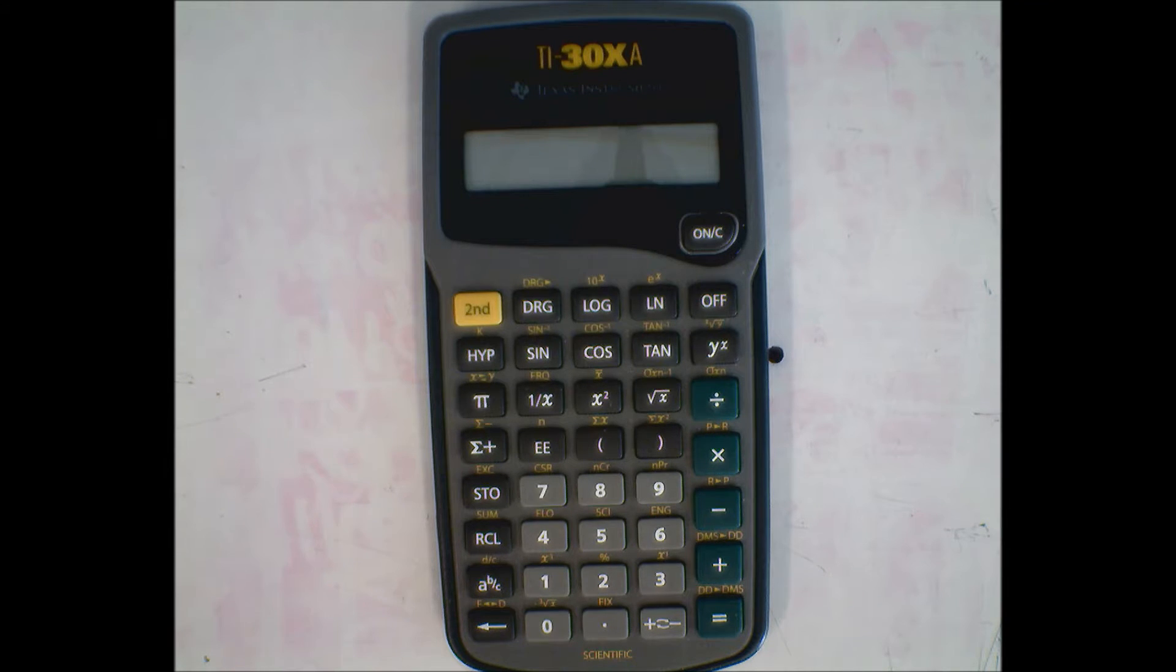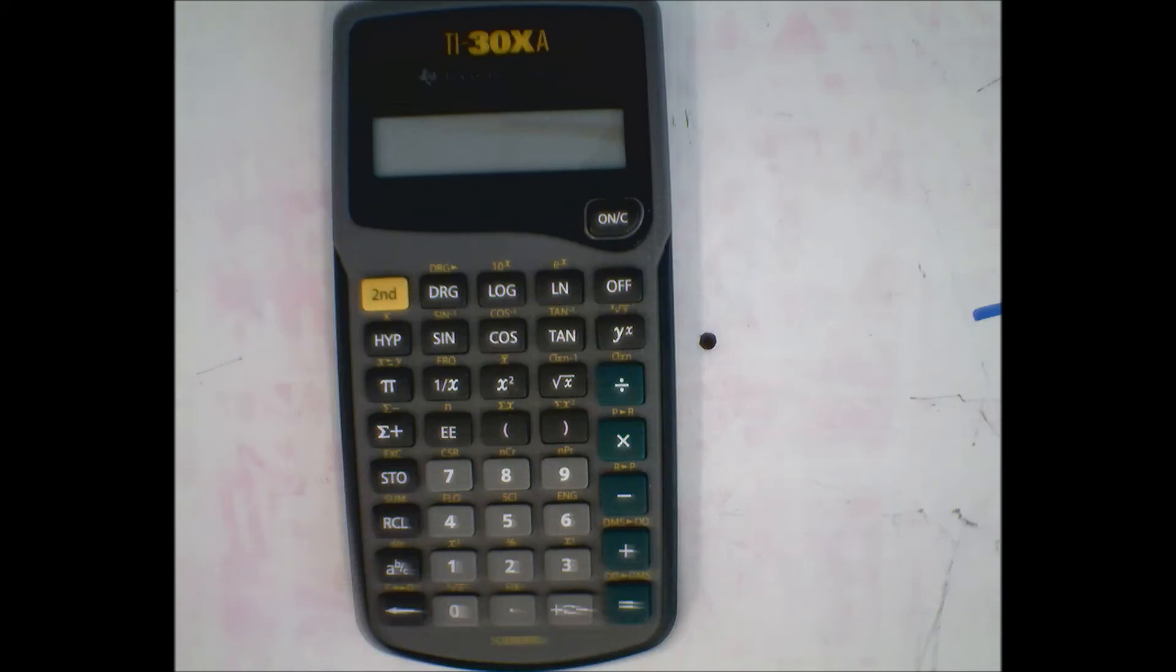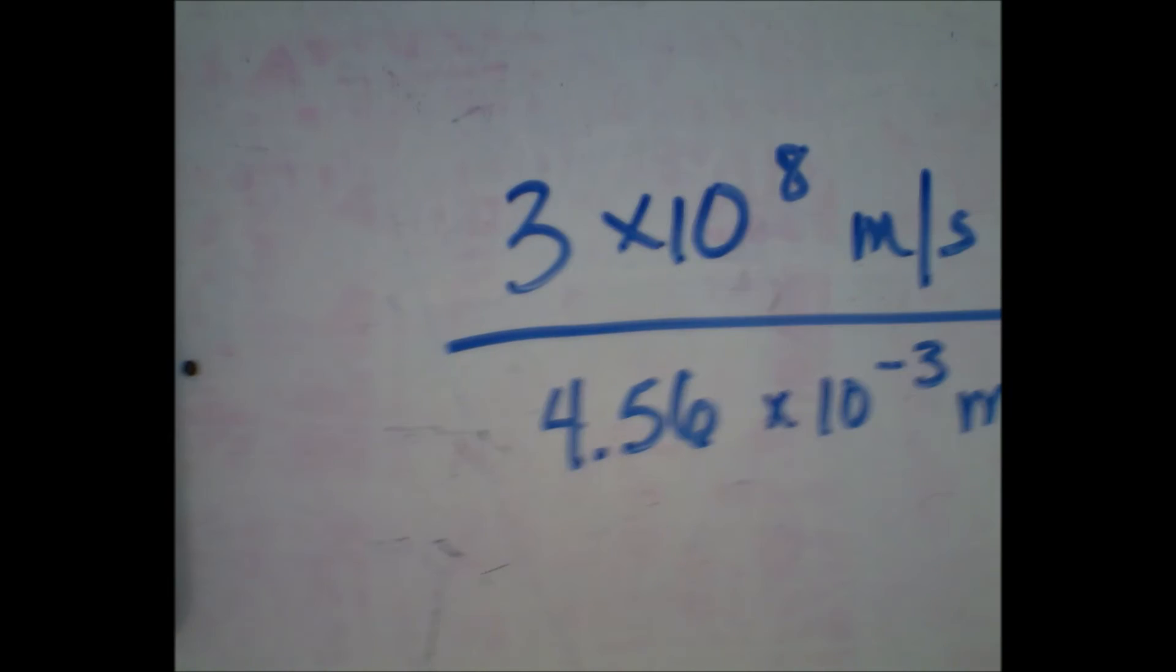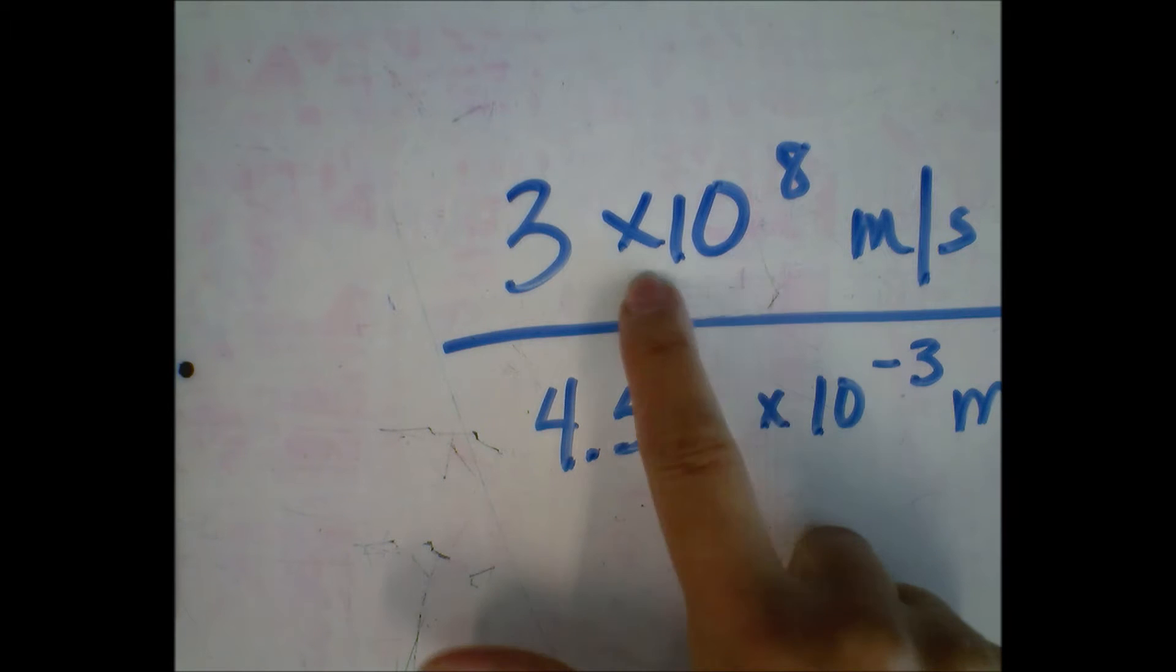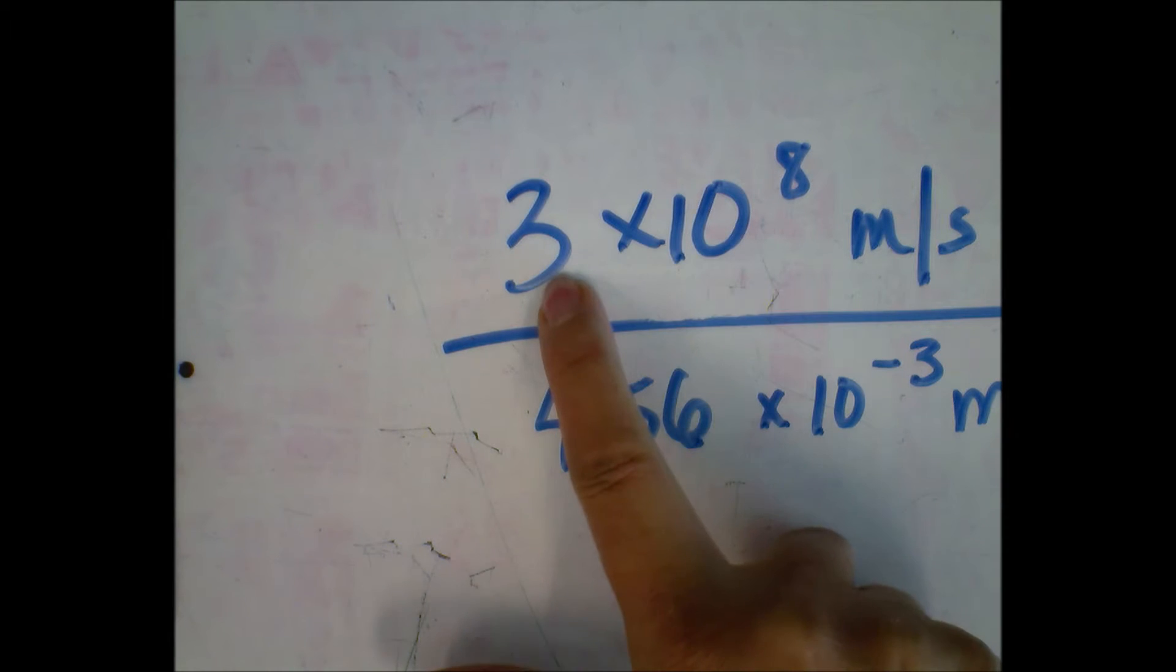In this video clip, we're going to figure out how to use our calculator and do scientific notation correctly, because there is a button that Texas Instruments has programmed to do the times 10 for you. It knows this part, all you have to do is tell it the coefficient and the exponent.